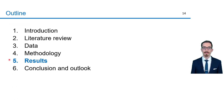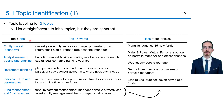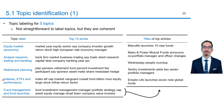Now let's take a look at the results. This slide shows the top 15 words of the five major topics, which were manually labeled. For instance, the words market, year, equity, sector, company, and so on, seem to refer to the equity market, which is closely tied to the economy. Other topics are analyst research, trading and banking, retirement planning, indexes/ETFs/performance, and fund management and fund launches.